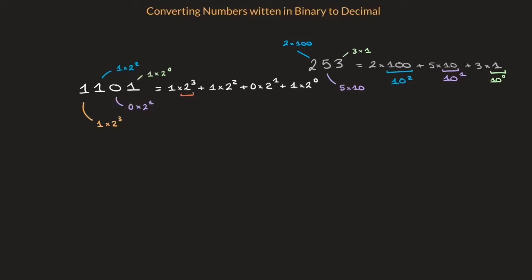Now, by all means check, but 2 to the power of 3 is 2 times 2 times 2, which is 8. 2 to the power of 2 is 4. 2 to the power of 1 is 2. And 2 to the power of 0 is 1.